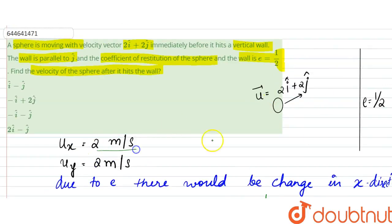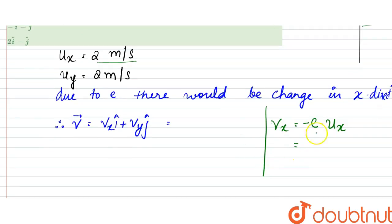The coefficient of restitution is half, so minus half into 2, that would be minus 1 meter per second. And v_y would be this only. So v that is minus i plus 2j meters per second.